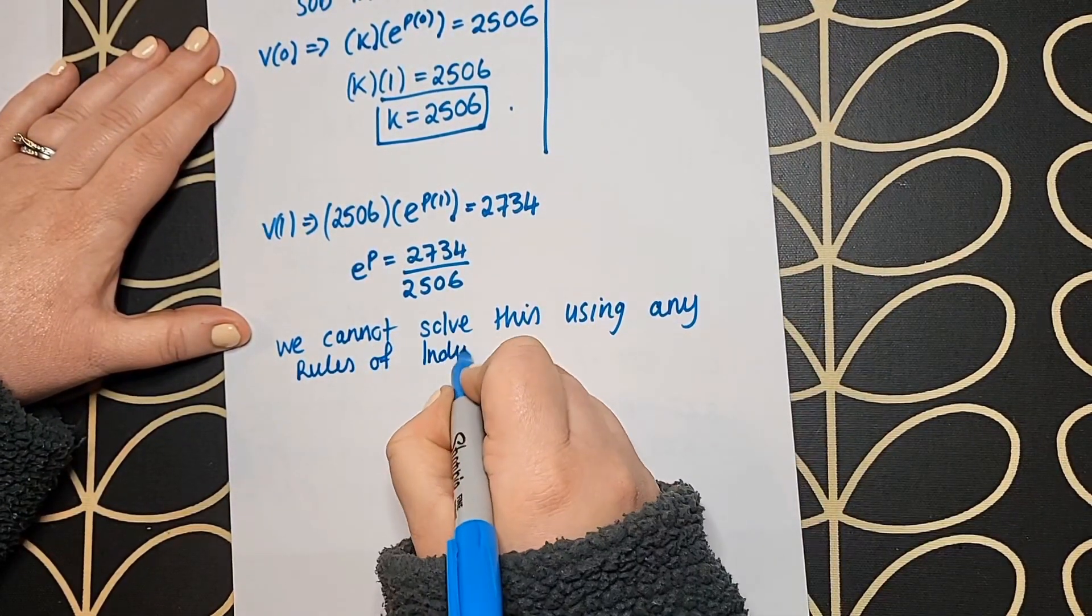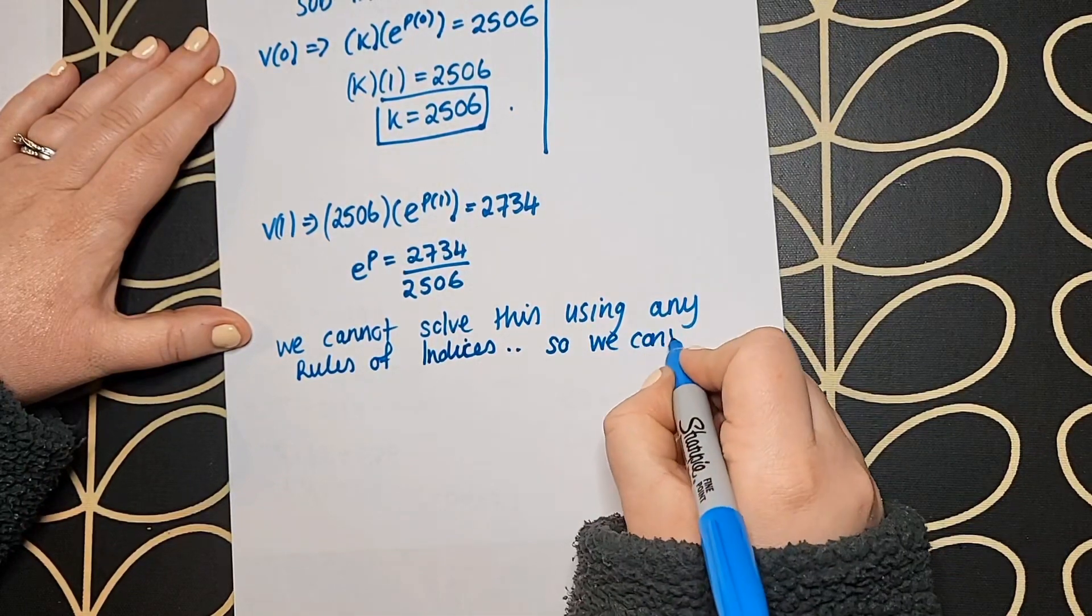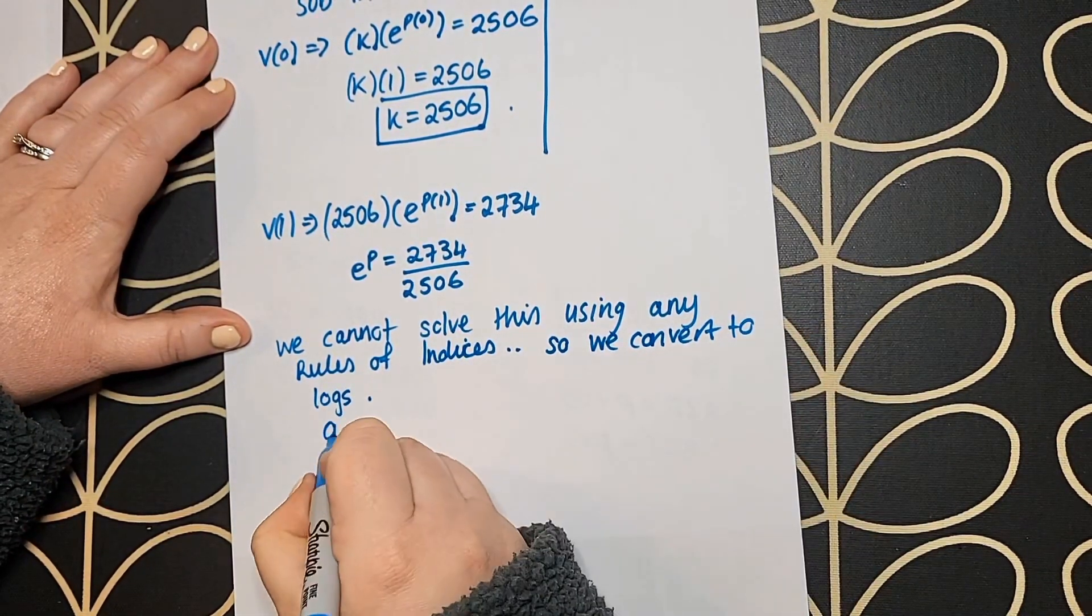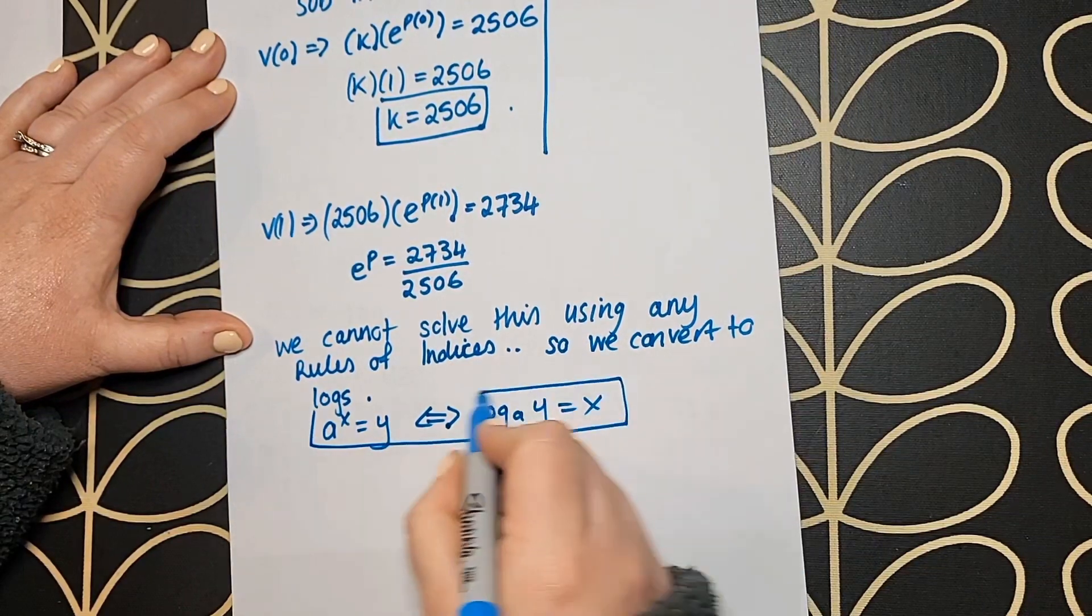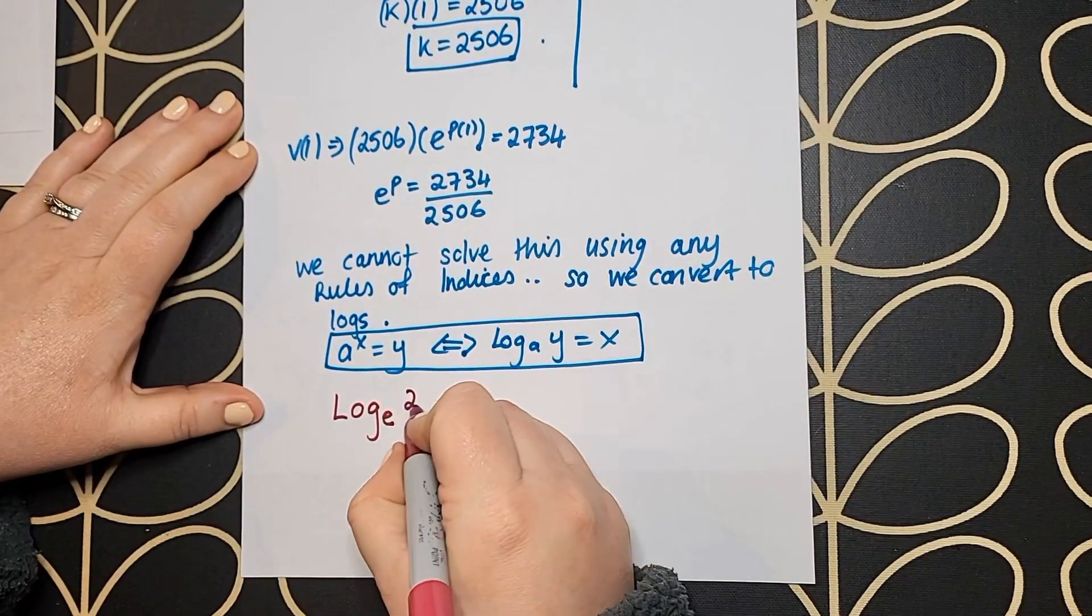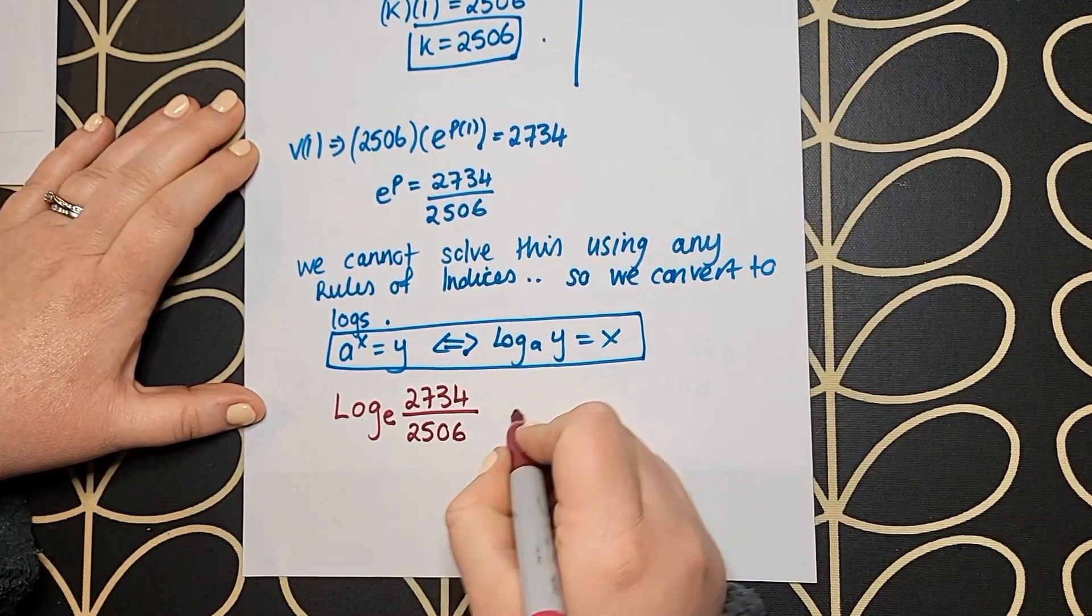I can't solve this using the rules of indices - there's no rule that's going to help. So that's where you convert to logs. I've got the conversion formula written out here, and I just change it and solve for p.